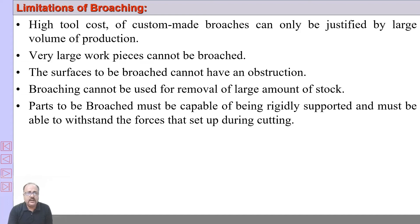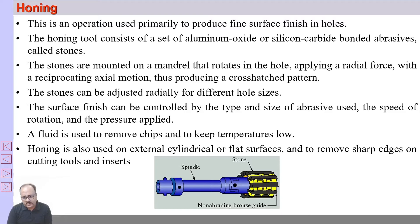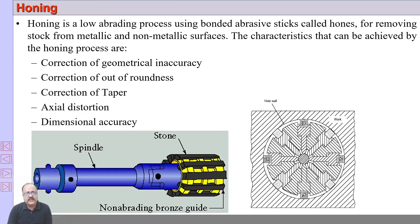Now we will be discussing the various finishing operations. One of the most important finishing operations is honing. Honing is basically a process of correcting small geometrical inaccuracies in a hole — correcting out-of-roundness, correction of a small amount of taper, slight axial distortion — and the dimensional accuracy can be increased by a honing tool.